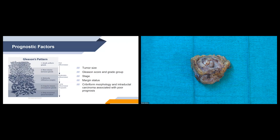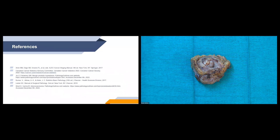Some prognostic factors related to prostate cancer: larger tumor size is associated with a worse prognosis. The Gleason score is the grade for prostate cancers, based on how much the cancer cells resemble normal healthy cells — the higher the score, the more aggressive the cancer and the poorer the prognosis. Stage and margin status are also important, and cribriform morphology and intraductal carcinoma are also associated with a poor prognosis. Thank you everyone for attending today's session.